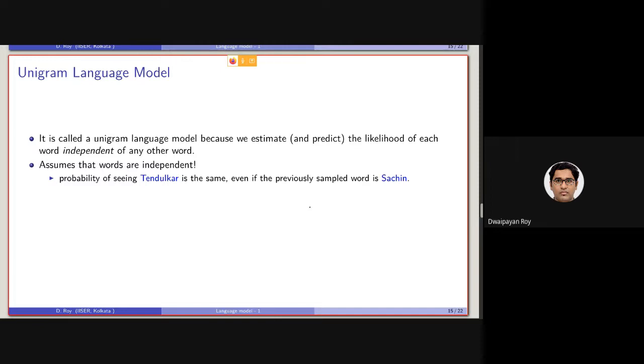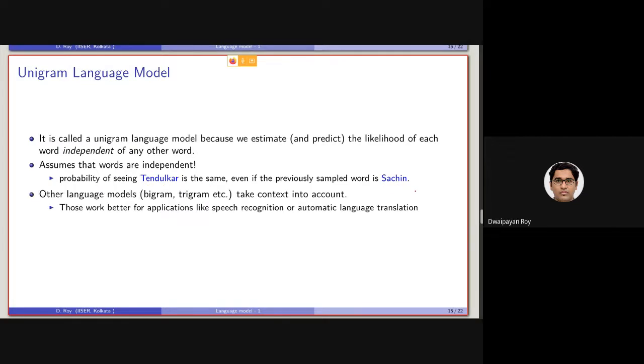For example, here is an example. Basically, the probability of seeing the term tendulkar is the same even if the previously sampled word is sachin, which, if we consider news collection, it is highly likely that a document containing the term tendulkar will also be containing the term sachin. I hope you can already understand the limitation of unigram language model. This independence is not actually true always.